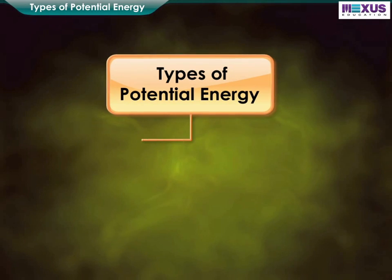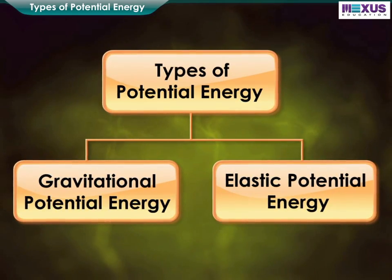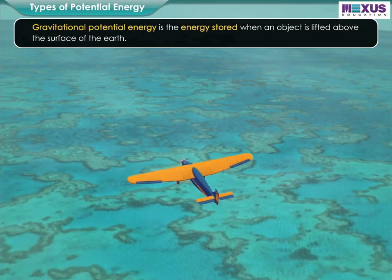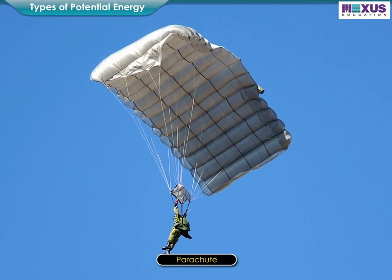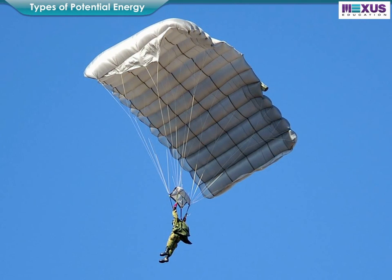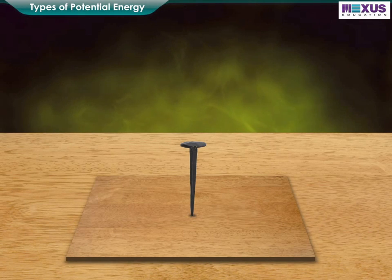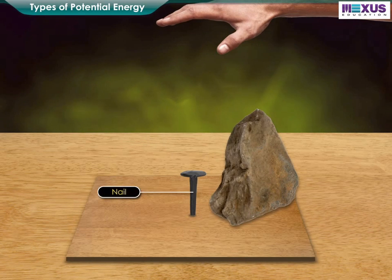Potential energy is the energy stored when an object is lifted above the surface of the earth. A flying plane, water stored in a dam, and a parachute in the sky are some examples of gravitational potential energy. The higher the object is lifted, the greater is its gravitational potential energy. A stone kept at some height has potential energy because of its position. When the stone falls on a nail fixed on a piece of wood, the nail sinks further into the wood.